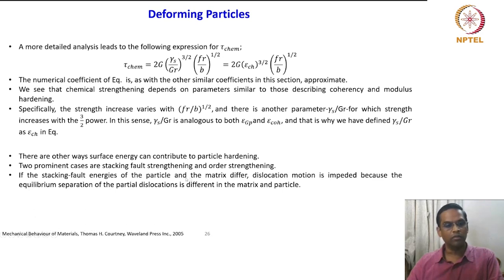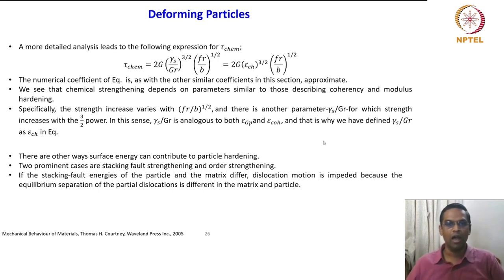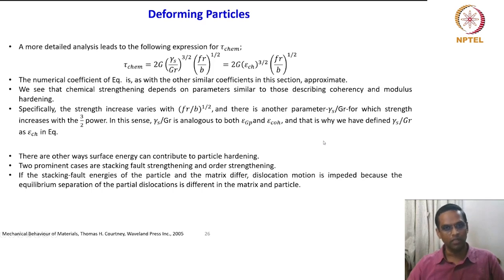If the stacking fault energies of the particle and the matrix differ, dislocation motion is impeded because the equilibrium separation of the partial dislocations is different in the matrix and particle. The ideas from dislocation dynamics — stacking faults, partial dislocations, when partials are stable and when they are not — all come into play here. We are now examining the stacking fault energy difference between particle and matrix and its consequences on the strengthening mechanisms.